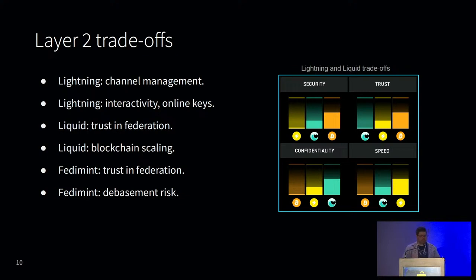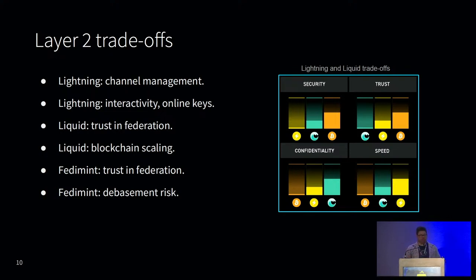FediMint also requires that you trust the community federation with multi-sig custody of your Bitcoin, and there's the risk that the federation can debase the eCash notes by minting more than their reserves — essentially playing fractional reserve games with depositors. There are some proof-of-liabilities schemes being researched, but these require users to constantly verify those proofs. Personally, I see Liquid as a checking account between Lightning and Bitcoin — useful for managing Lightning liquidity with trustless swaps through a service like Boltz Exchange or the Aqua Wallet, and for managing UTXOs during high fee environments before moving to cold storage.